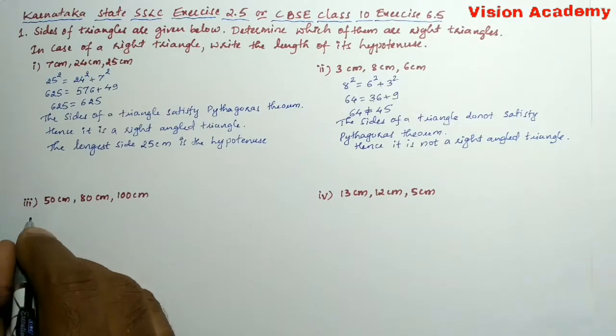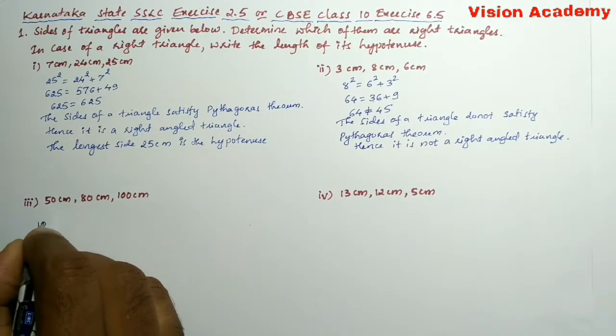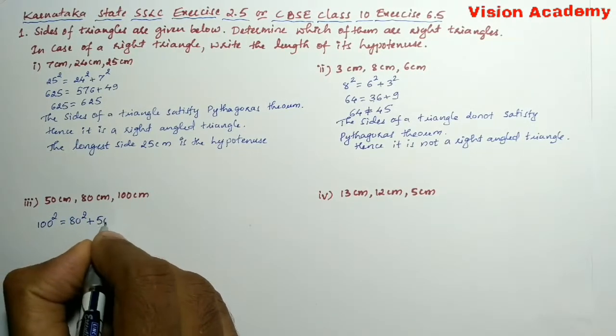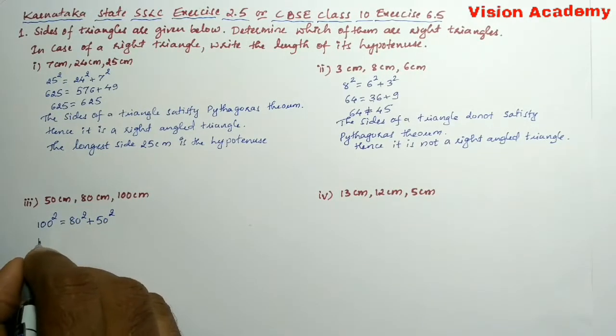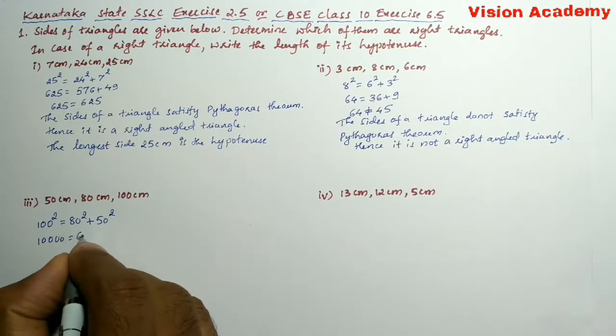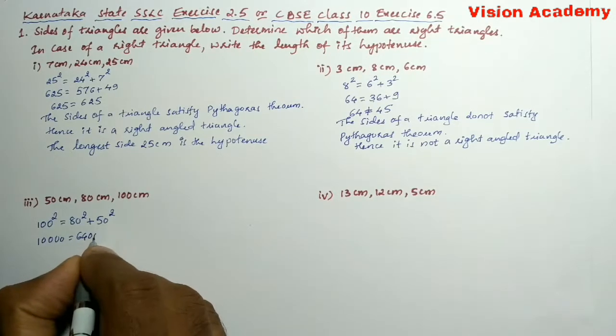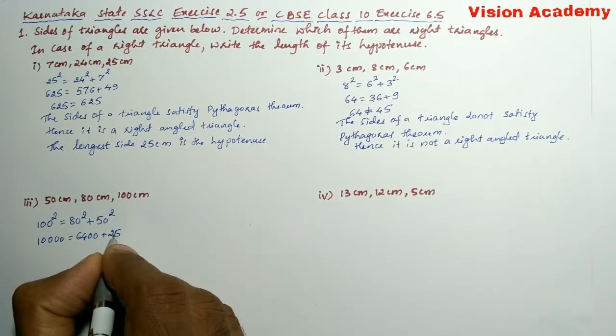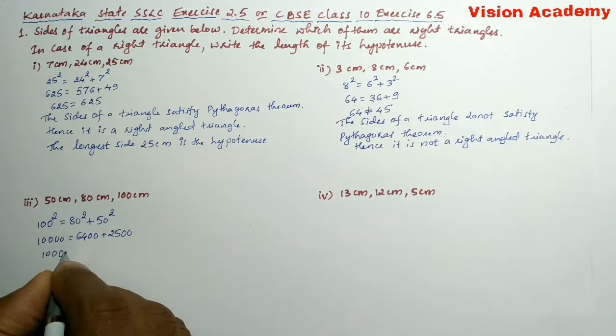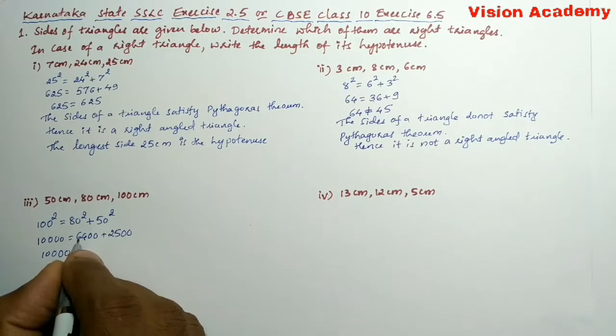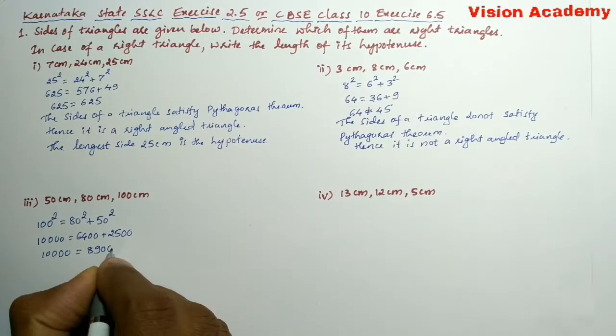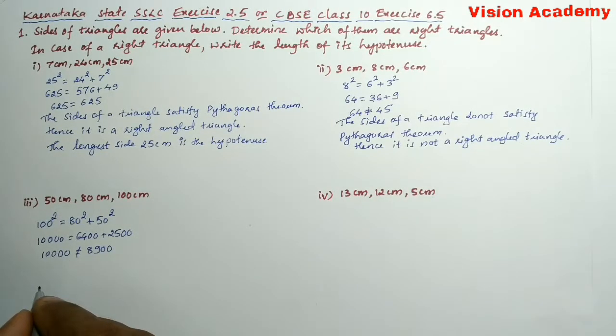Now let us move on to question number 3. Here 100² = 80² + 50². 100² gives us 10,000. 80² = 6400, plus 50² = 2500. Here 10,000 ≠ 6400 + 2500 = 8900.